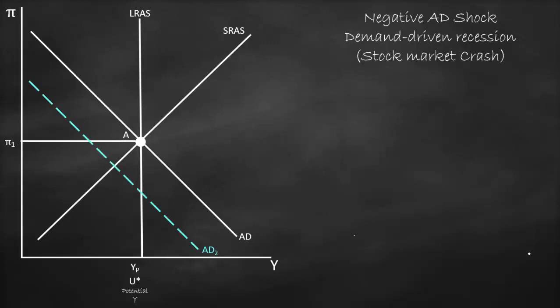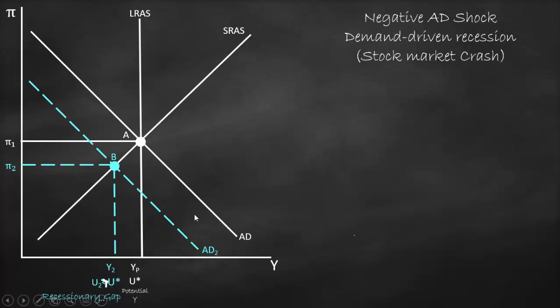If we have a negative aggregate demand shock, aggregate demand will shift to the left. We now have a new point of intersection between aggregate demand 2 and short-run aggregate supply, which is point B. This results in a lower inflation rate and a lower output level. Therefore, unemployment is bigger than the natural rate of unemployment, which means we have a recessionary gap — we produce less, people work less, and we have a recession.